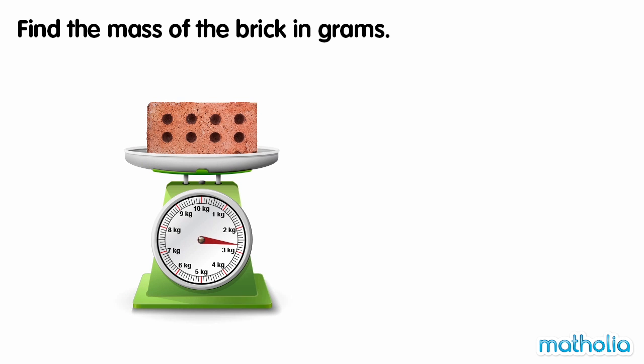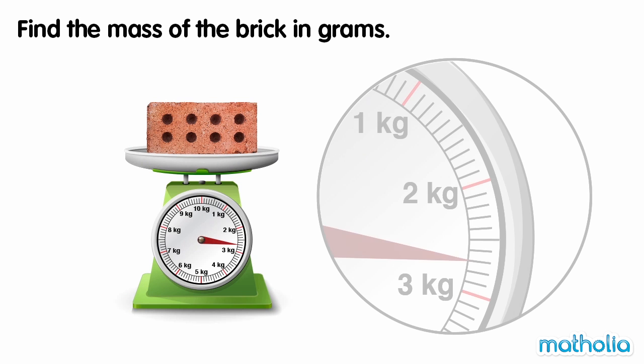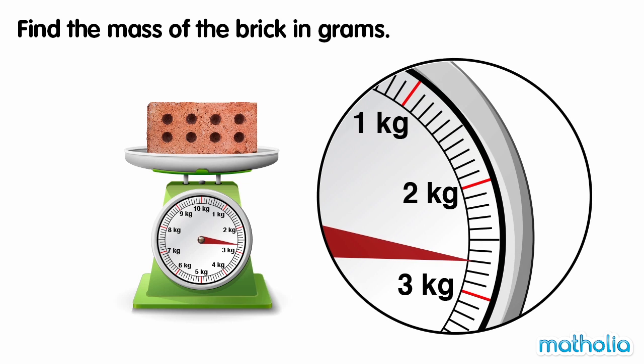Find the mass of the brick in grams. Each line on the scale shows 100 grams, so the mass of the brick is 2 kilograms plus 700 grams.